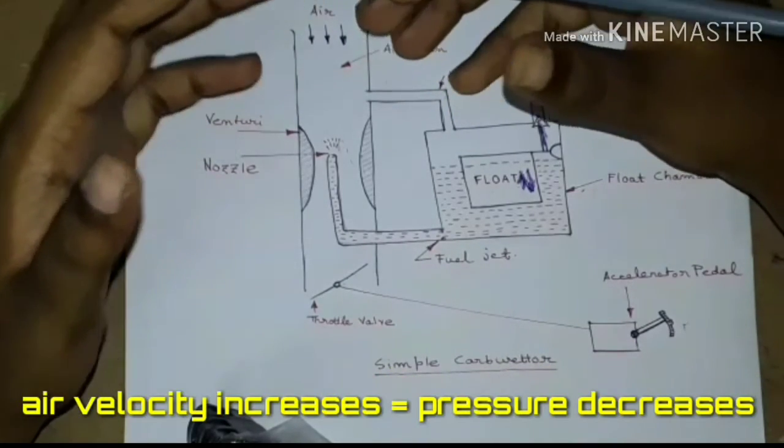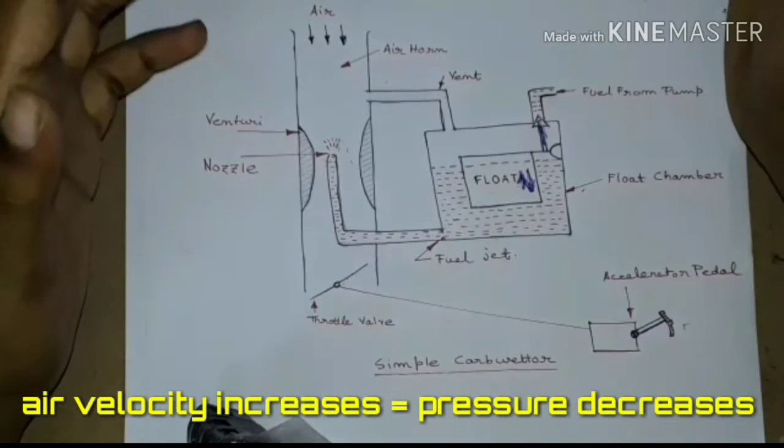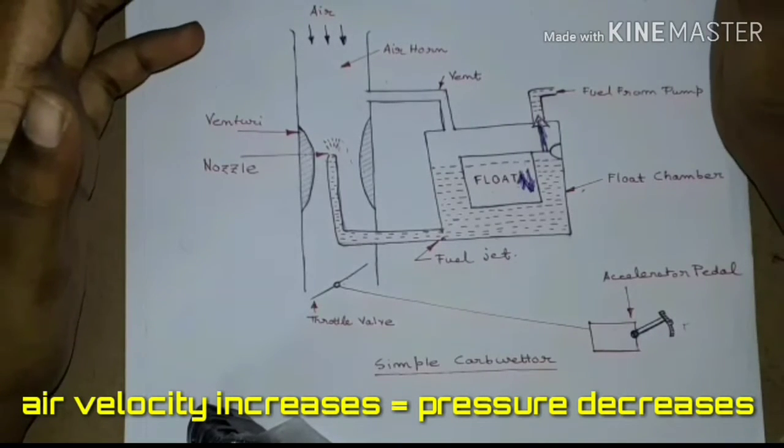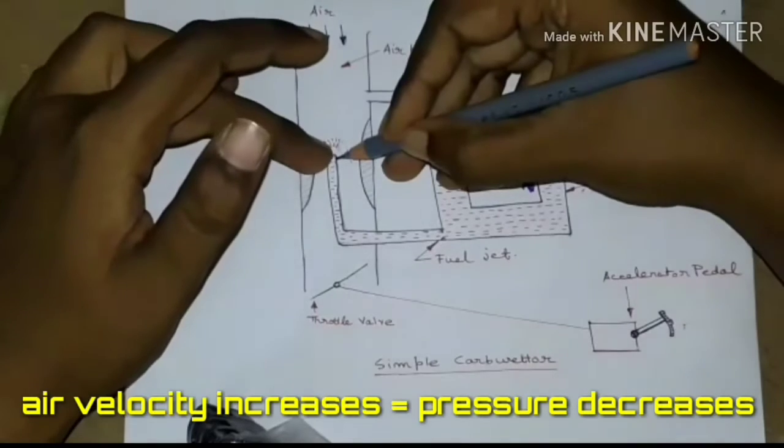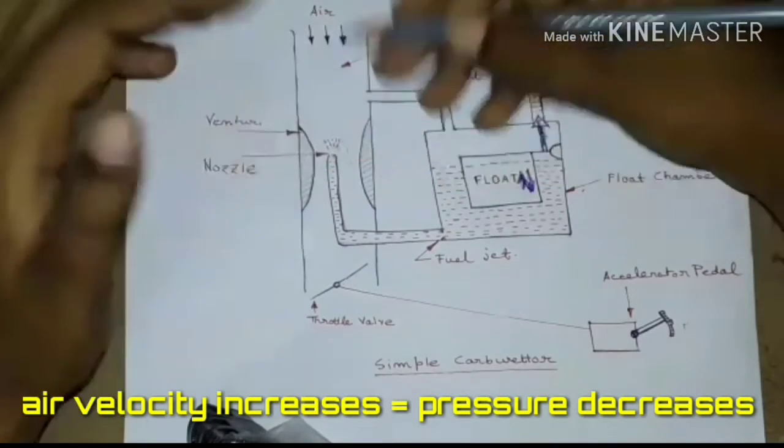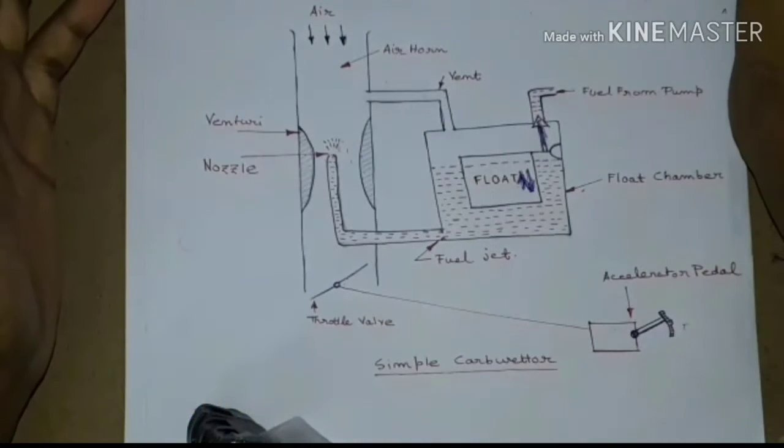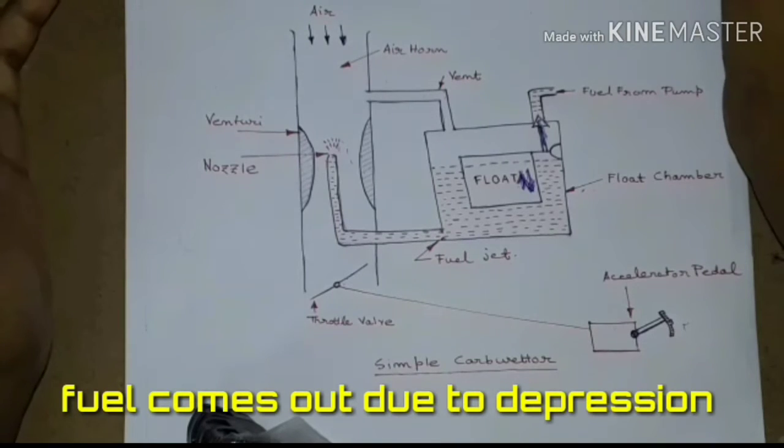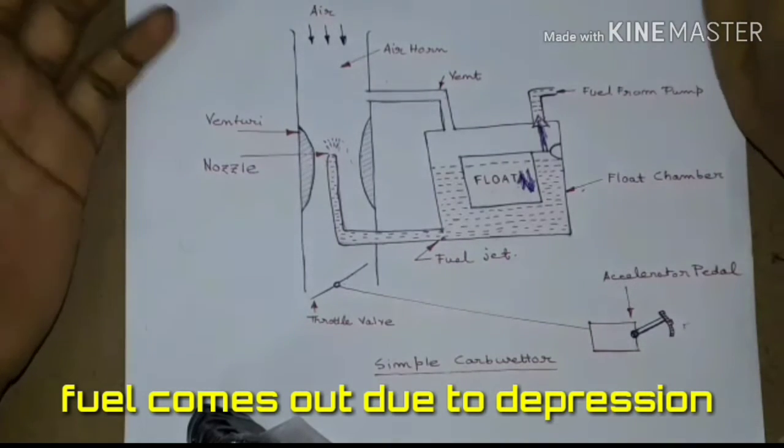Due to less area, the air velocity increases, and because of this increase in velocity, a decrease in pressure is caused at the nozzle which is located in venturi itself. Due to this depression at the nozzle, the fuel comes out and is vaporized by the arriving airstream.